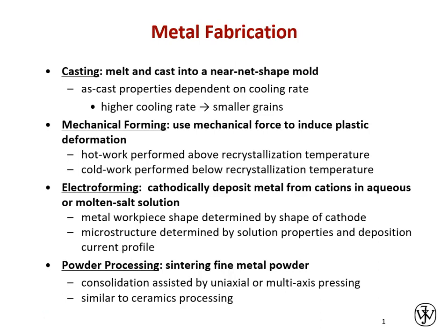Hot work is above dislocation climb temperature — again about half the melting point — where we get very rapid dislocation climb and can annihilate dislocations, so we're not getting progressively increasing cold working during forming. Electroforming is a bit unique and serves in cases where other methods fail, especially when we have to make retro-curved axis-symmetric parts that couldn't easily be cast or formed — though it does require a conductive workpiece. Powder processing is a mainline ceramic processing method that can also be applied to metals and is particularly useful for refractory metals.